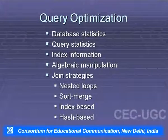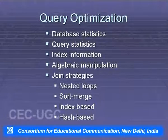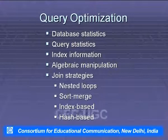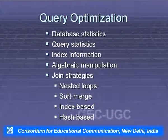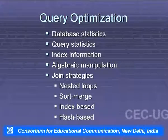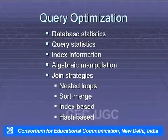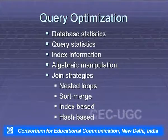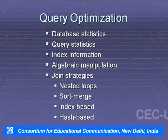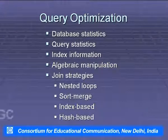Query optimization involves: database statistics, query statistics, index information, algebraic manipulation, and join strategies. Join strategies include nested loop, sort-merge, index-based, and hash-based approaches.